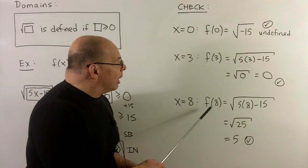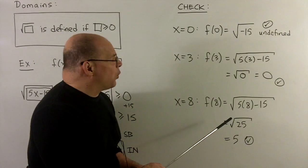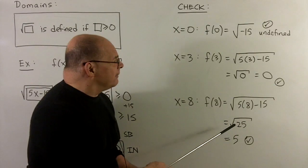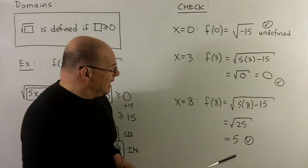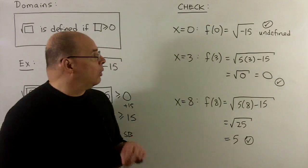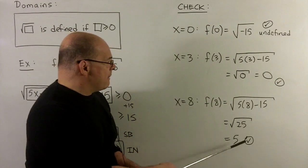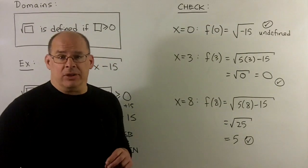if I put an 8 in here, 5 times 8 is 40, minus 15 is a 25. Square root of 25 gets me to a 5. This is a number, so number in, number out, 8 will be in the domain.